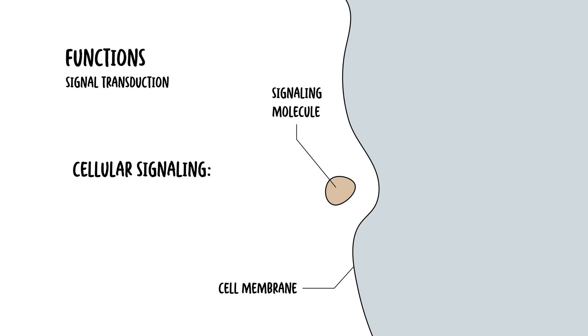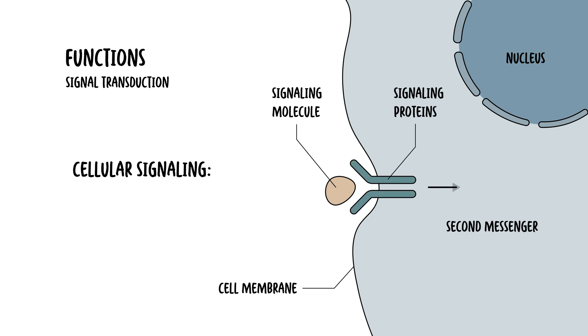The cytoplasm is also important for signal transduction. It's involved in cellular signaling, where signaling molecules relay messages from the cell membrane to the nucleus or other parts of the cell. Essentially, various signaling proteins and second messengers in the cytoplasm facilitate these processes, ensuring that the cell responds appropriately to external or internal stimuli.